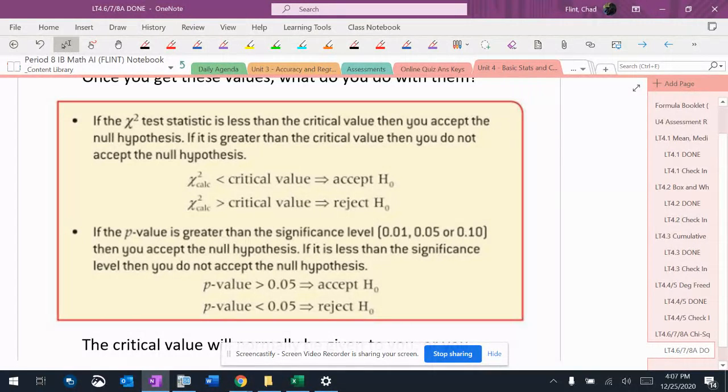If your chi-squared value you get out of your calculator is less than the critical value, you accept the null hypothesis, which would mean that they're independent of each other.